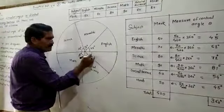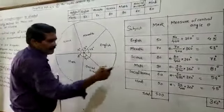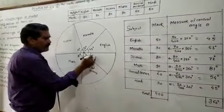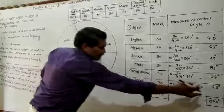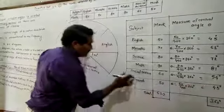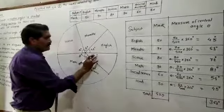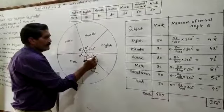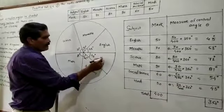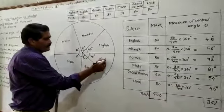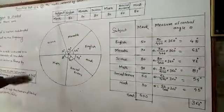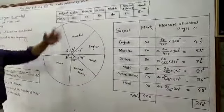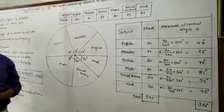The remaining sector is 45 degrees, which is the central angle of Hindi. In this way, you have to draw the pie diagram.